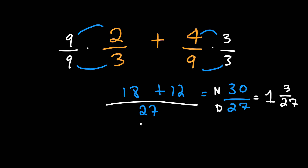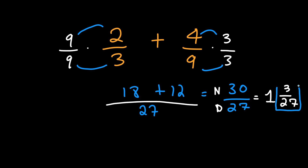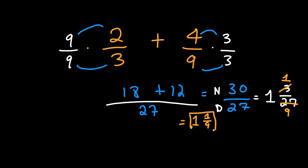But be careful — we're not finished, because three over twenty-seven can be simplified further by three. Always check if the fraction can be further simplified. Three divided by three is one, and twenty-seven divided by three is nine. So our final answer is one and one over nine.